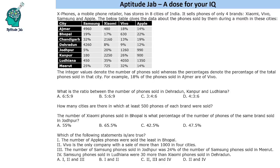Hello everyone, welcome to Aptitude Jab. In this set we are given a data table. It says that X Phones is a mobile phone retailer with stores in 8 cities of India. It sells phones of only 4 brands. This table gives data about phones sold during a month in these cities. The integer values denote the number of phones sold, whereas the percentage values denote the percentage of the total phones sold in that city.